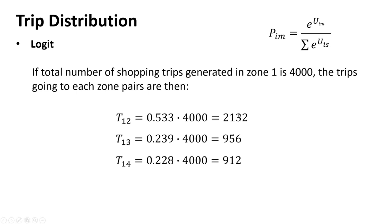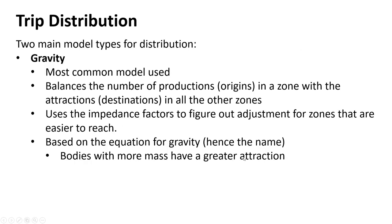That's trip distribution using Logit — we now know how many trips are going from zone one to each other zone. The next questions are: what mode are you using, and if driving, what road? If walking, which sidewalks or streets? If bus, which route? But step one is always how many people are going from one zone to another.